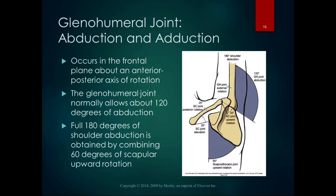Glenohumeral abduction and adduction occurs in the frontal plane about an anterior-posterior axis of rotation, so a muscle must be superior or inferior to that axis to perform these motions — the deltoid is superior, the latissimus dorsi is inferior. The glenohumeral joint normally allows about 120 degrees of abduction, so to get the full 180 degrees of shoulder abduction, we borrow 60 degrees from scapular upward rotation. Glenohumeral motion accounts for 120 degrees and scapulothoracic upward rotation contributes 60 degrees to reach full 180 degrees.